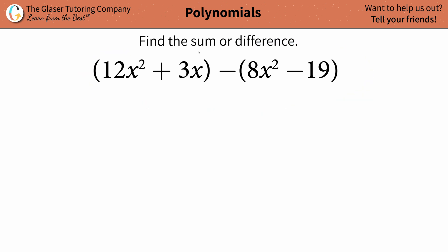Okay, so in this case, first let's identify whether we're going to find the sum or the difference. Now we have 12x² + 3x, and we're going to subtract with 8x² - 19.